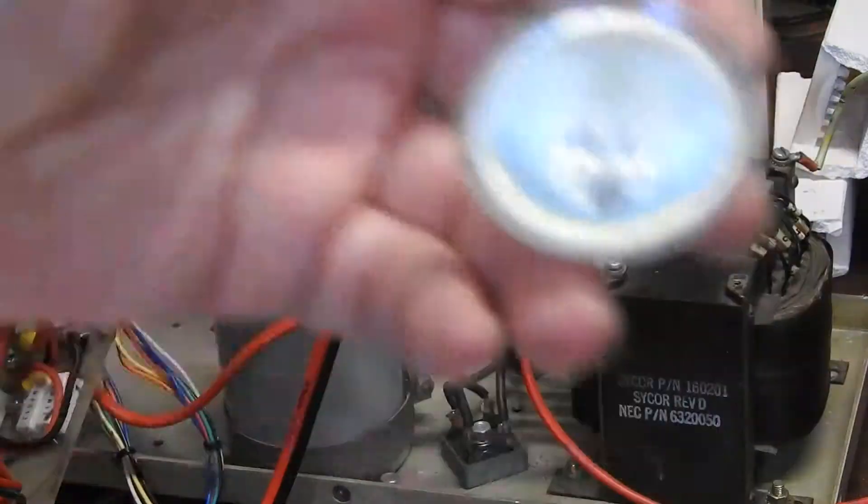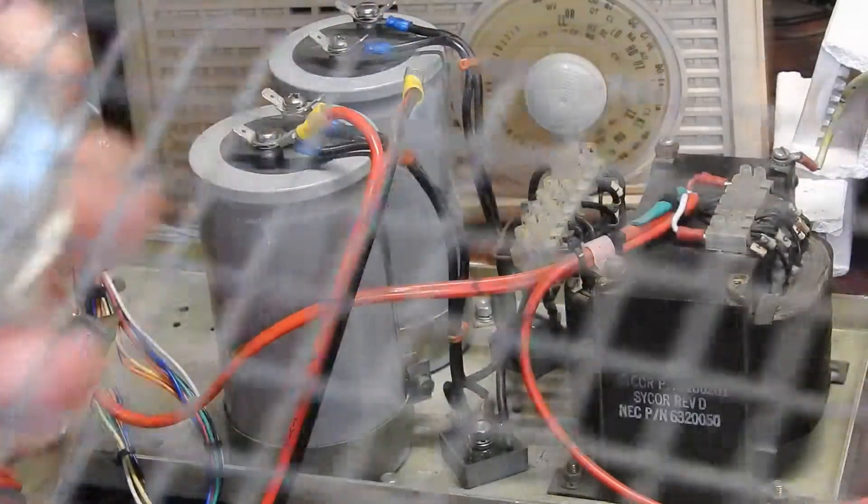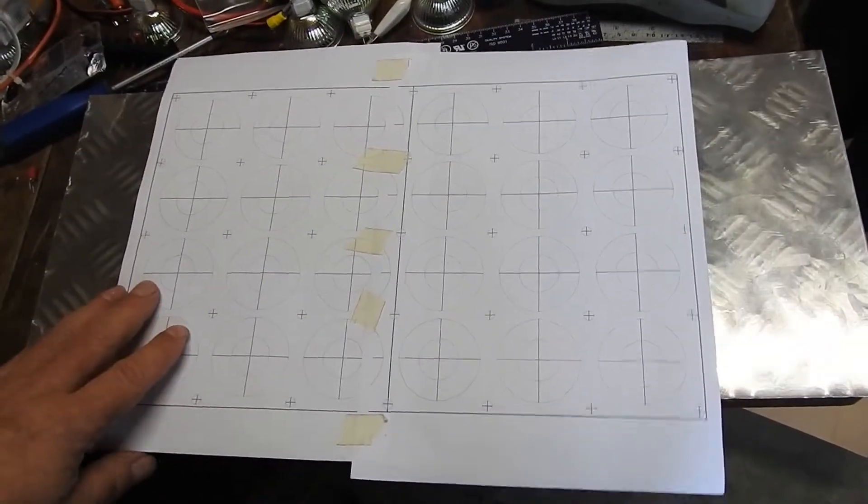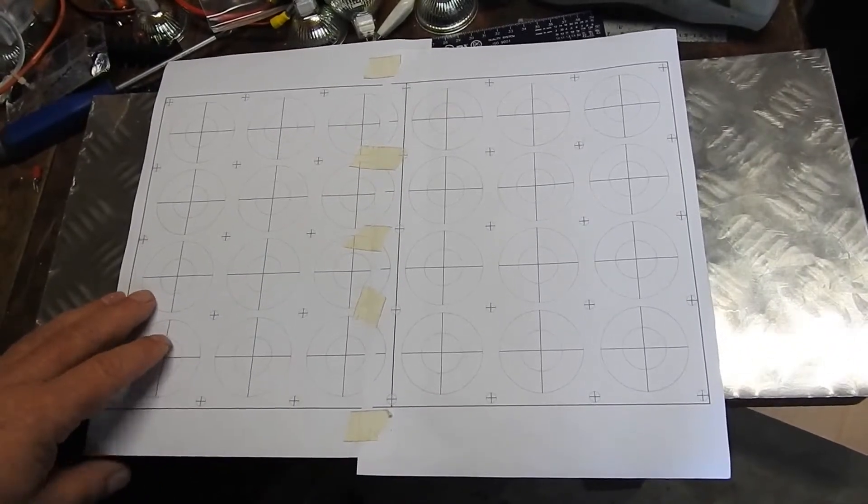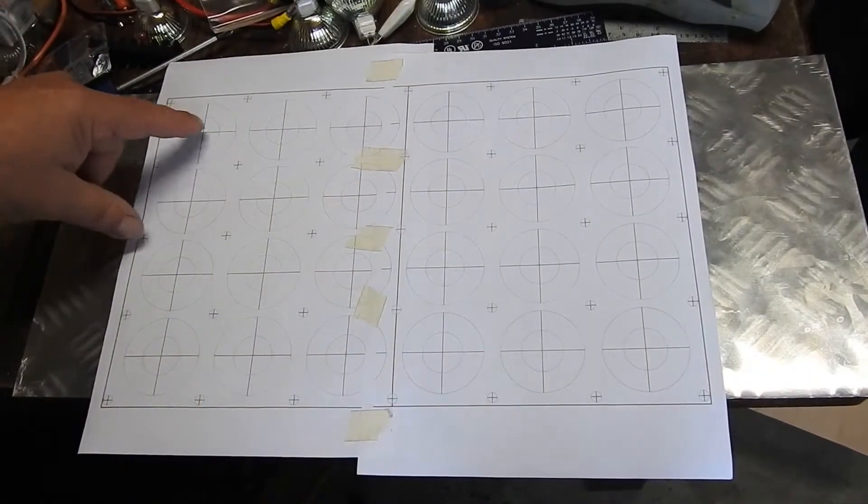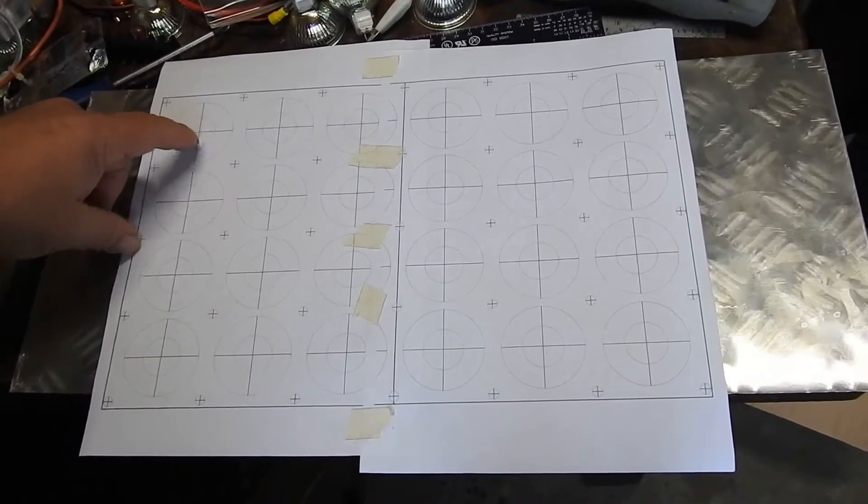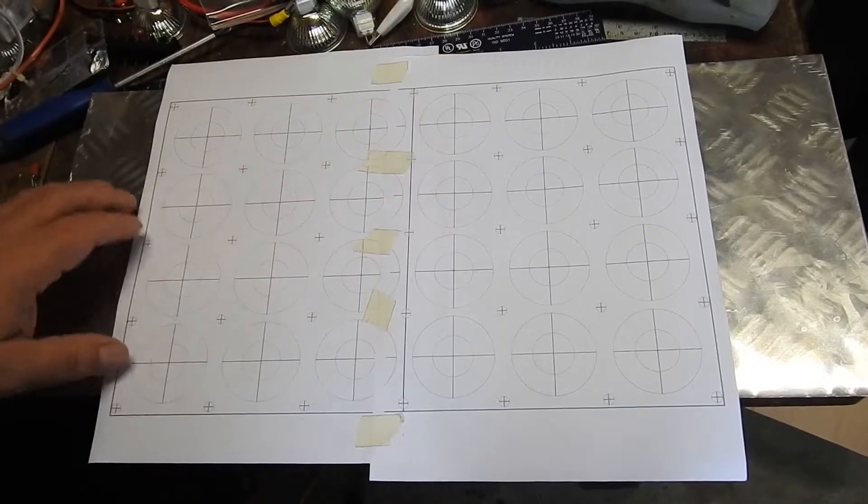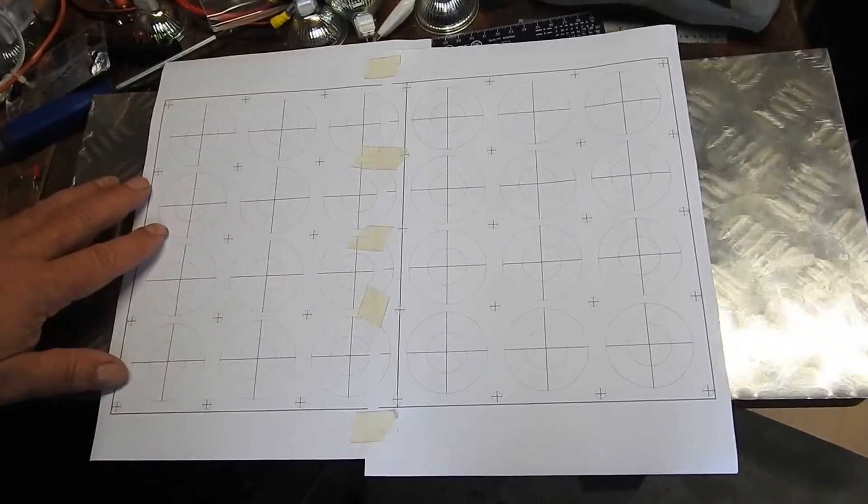So I've come up with this overlay for drilling the holes. These inner circles are the holes I'm going to drill, the outer circles just indicate where the bulbs are, and all these other holes are tie points for the wire mesh.